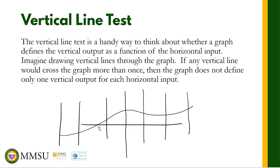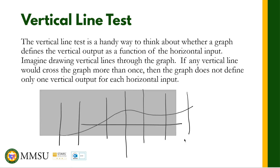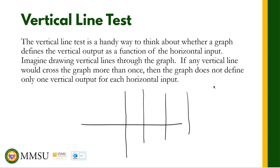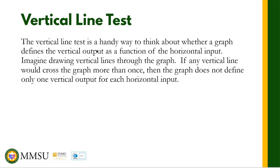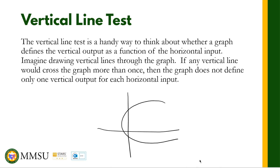We can readily say if a graph is a function or not by using the vertical line test. For example, if we have a graph and we try to pass a vertical line through it and it intersects the graph at two points, then this is not a function because it fails the vertical line test.